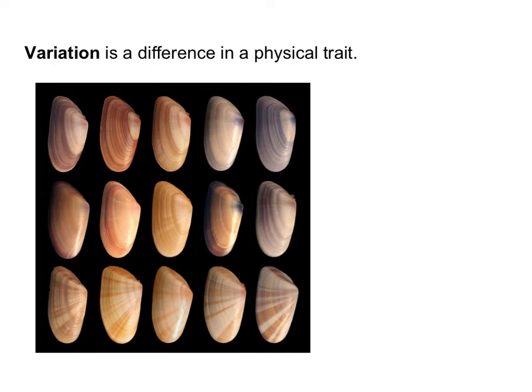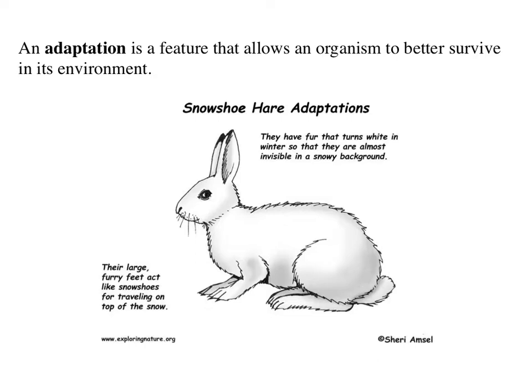Variation is just a difference in physical trait — all the variety we have of something, like these shells right here, or hair color, eye color, height, or types of stripes. Things like that are just variation. It's not good or bad, it's just a difference.